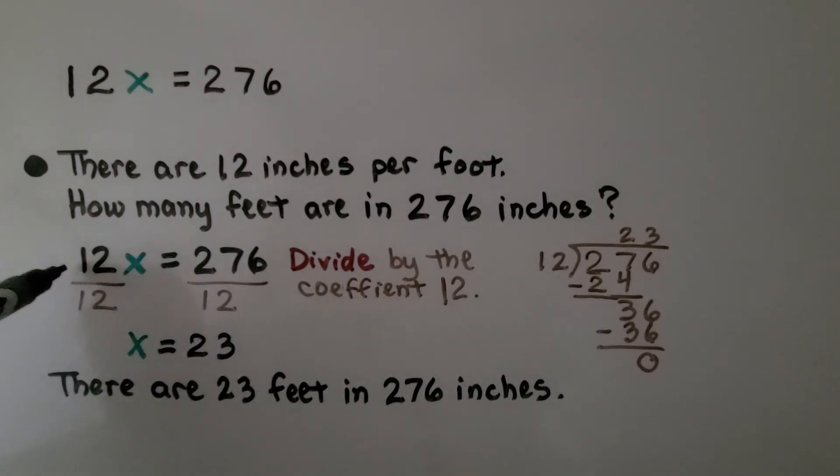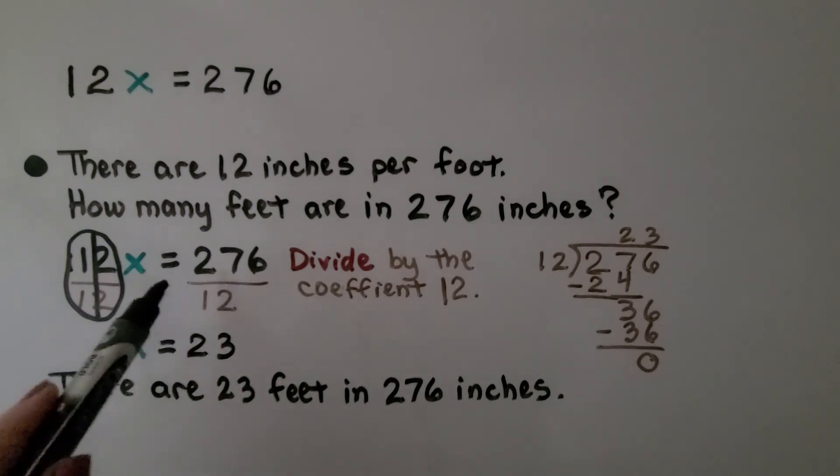On this side of the equal sign, we have the same numerator and denominator. It creates a 1. We have 1x, but we don't write a 1 as a coefficient. On this side, we have 276 divided by 12.